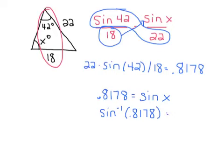You should get approximately 54.8 to 55 degrees. Make sure you're in degree mode on your calculator and that you used inverse sine — second then sine, then enter 0.8178. Because I'm looking for an angle measure, you have to do the inverse.